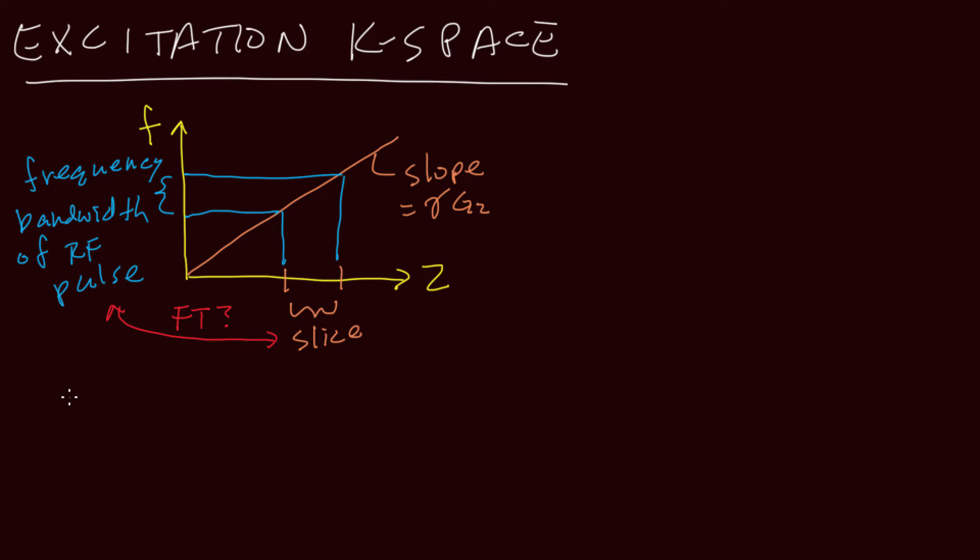First of all, since most RF pulses are short compared to both T1 and T2, we'll ignore relaxation effects altogether and we'll simply look at the response of magnetization to a B1 waveform in the presence of a simultaneous gradient waveform.